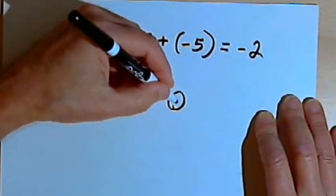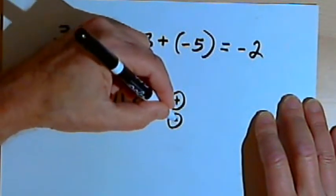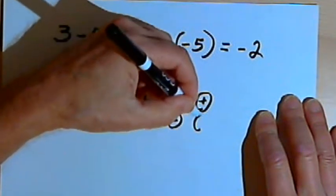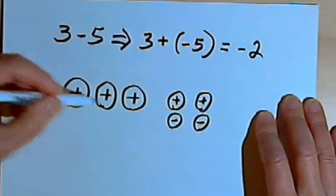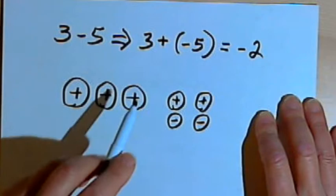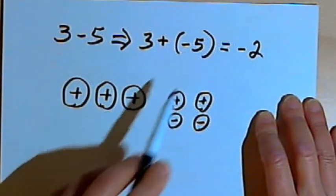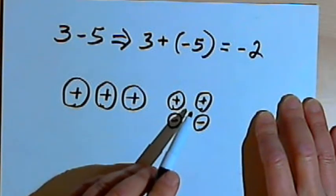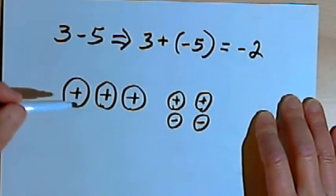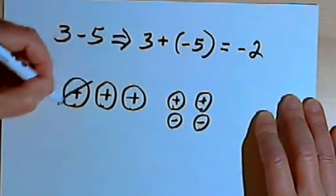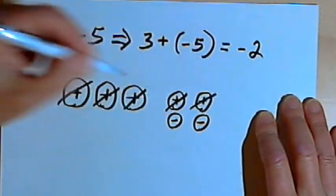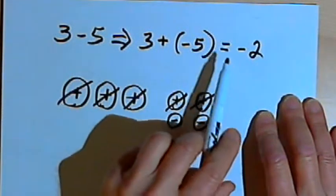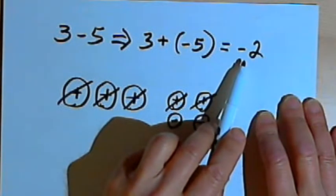So I'll add a positive chip and a negative chip — that's like adding zero — and then another positive chip and another negative chip. Now I've got 5 positive chips and 2 negative chips. To take 5 away from the 3, I cross out the 5 positive chips, and I end up with 2 negative chips — the same negative 2 I got arithmetically.